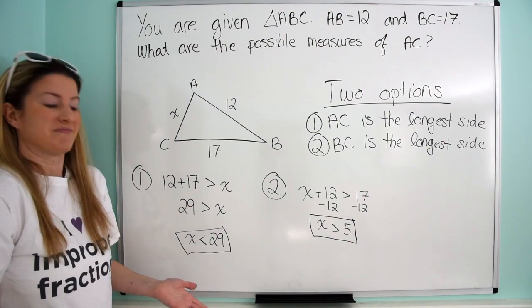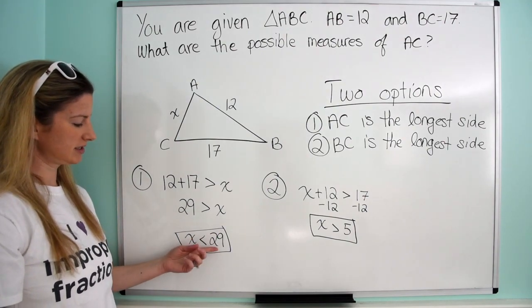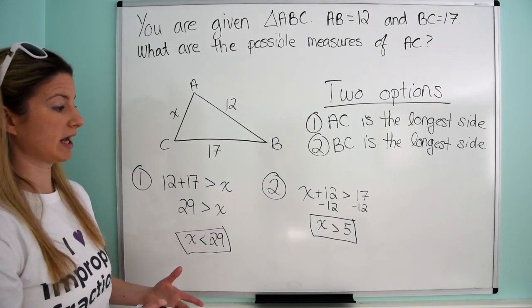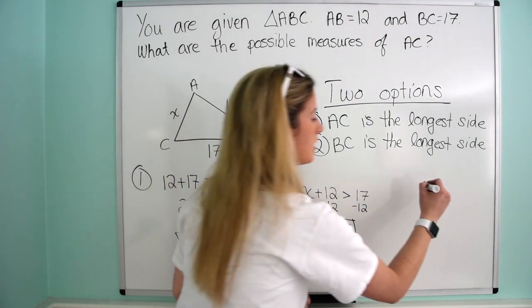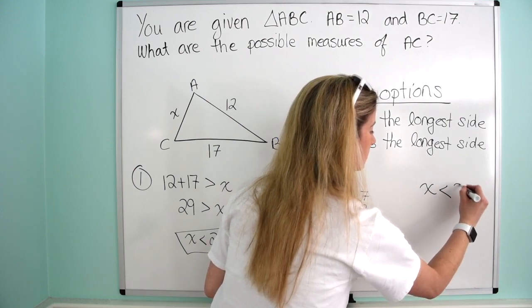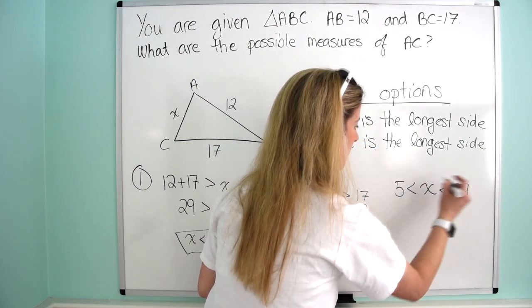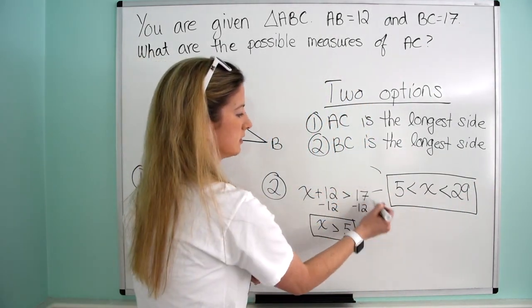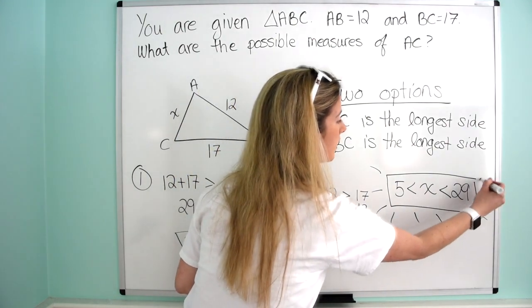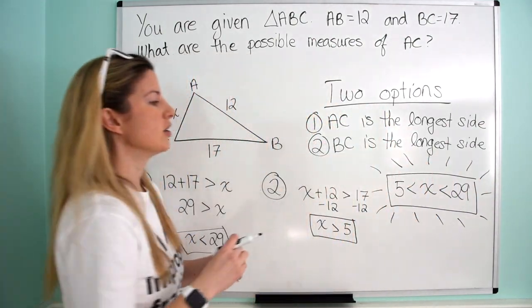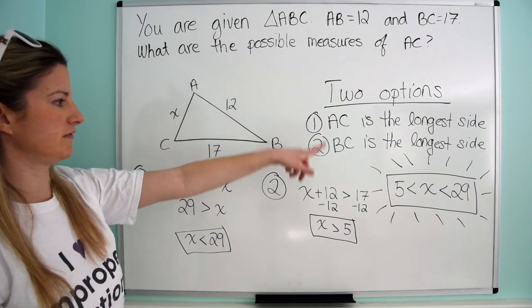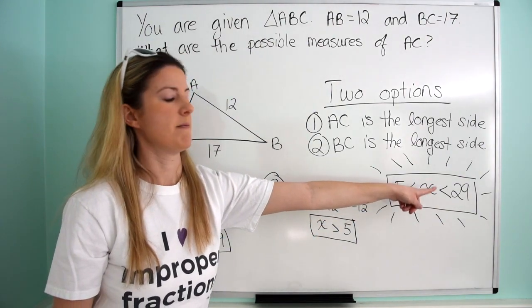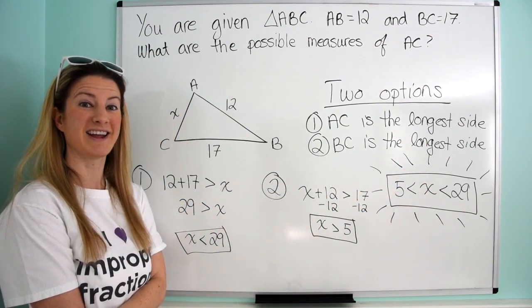We know that X must be less than 29 and greater than 5. So we can write a compound inequality: 5 < X < 29. Those are all the possible values. AC can be anything greater than 5 but less than 29.